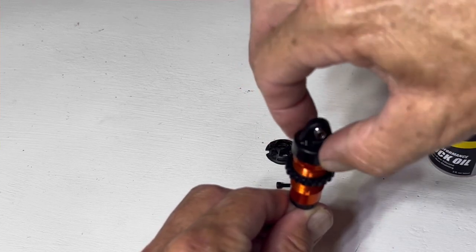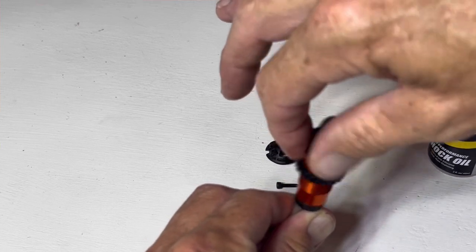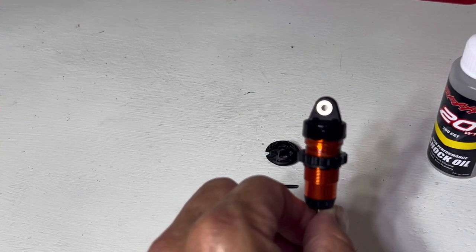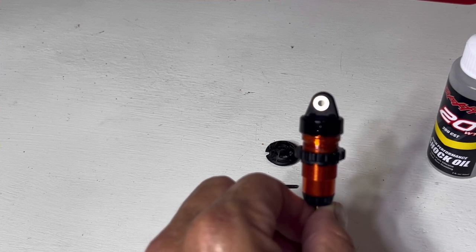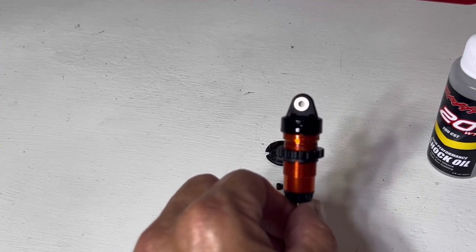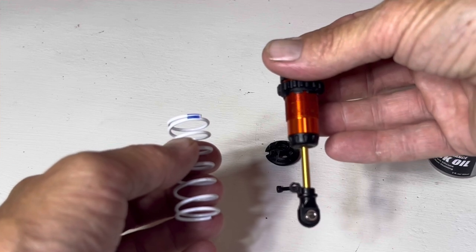And there we have it, back together in one piece. So grab yourself a cloth or a paper towel, clean this thing up that way it's not all slipping and sliding, and we'll put it back together.